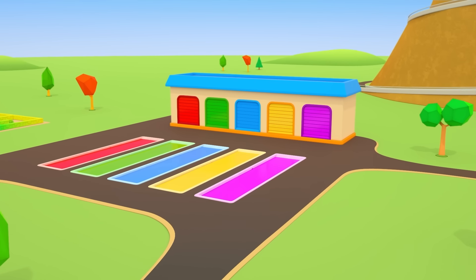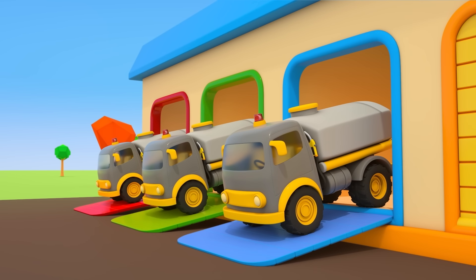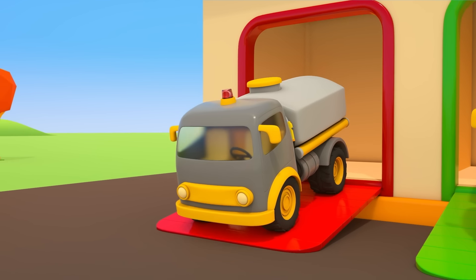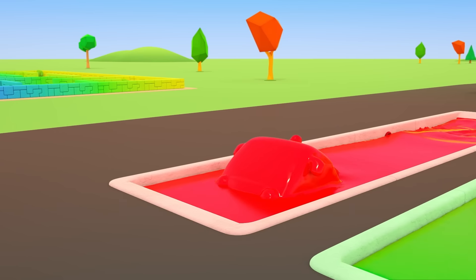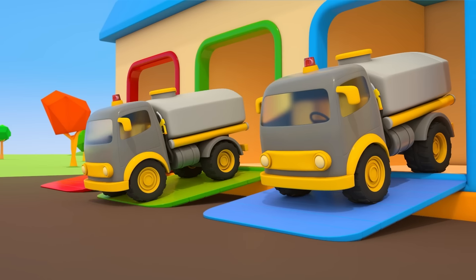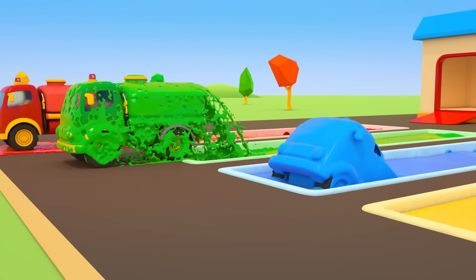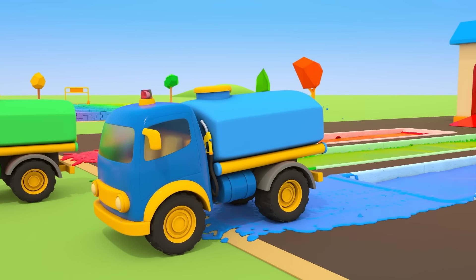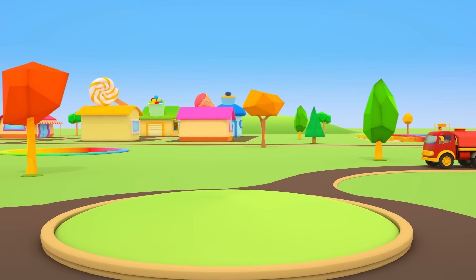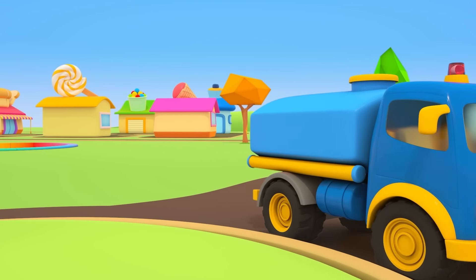This is the Helper Cars Garage. And in front are pools of paint. Fuel trucks are coming out of the garage, but they're all gray. Let's paint them. The first fuel truck comes out red, the second one green, and the third one blue. The three fuel trucks are heading for work.